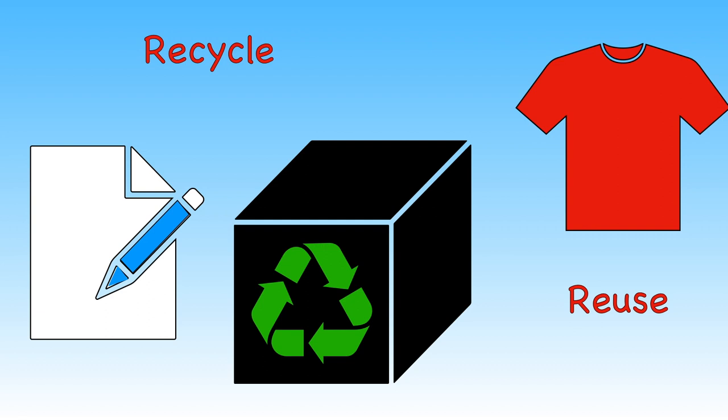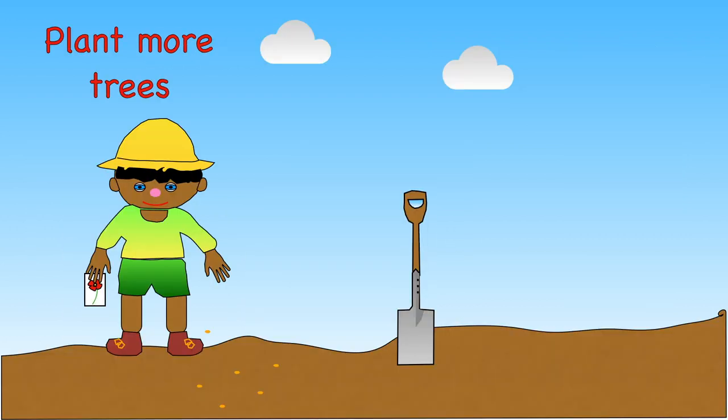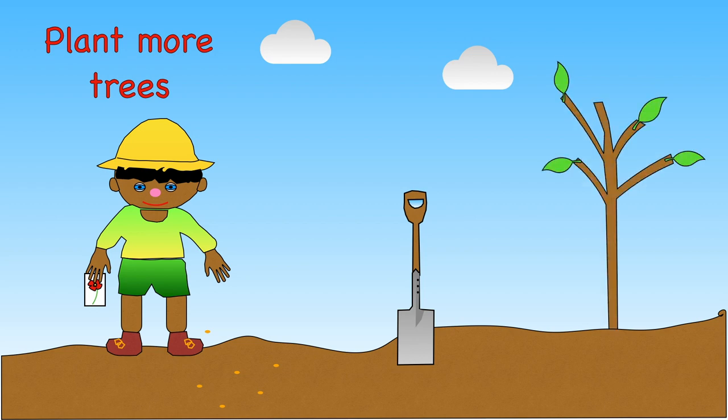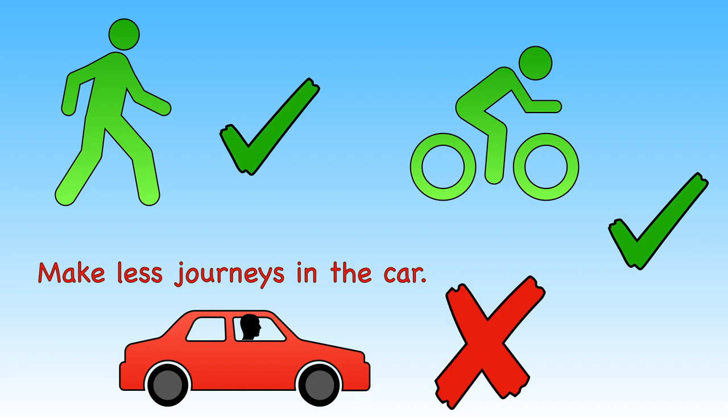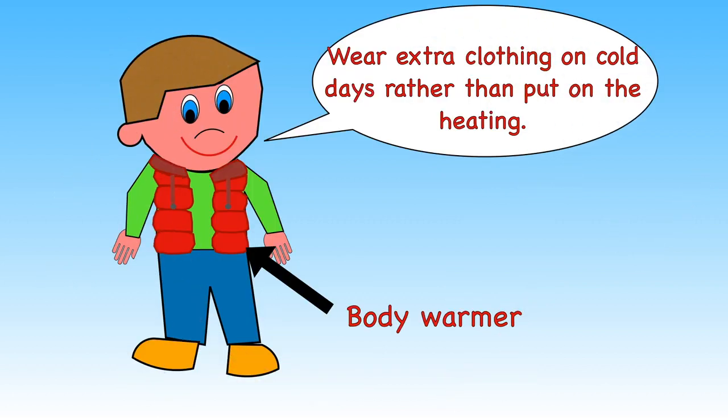Have you ever considered buying second-hand clothes? Making new clothes needs lots of water and energy. Why not ask an adult if you can plant a tree? We know that trees take in harmful carbon dioxide and can help make the air fresh and clean. Consider walking or riding a bike if your journey is short. The less cars there are on the road, the less traffic pollution there is. On cold days, why not wear extra clothes rather than put on the heating? This too saves energy.